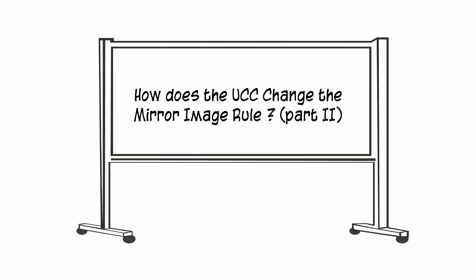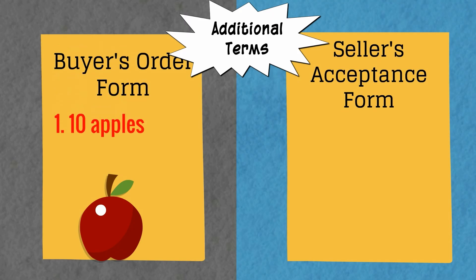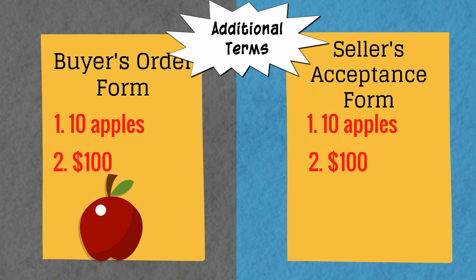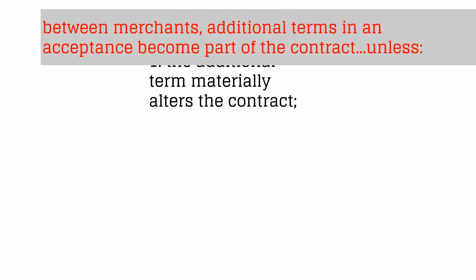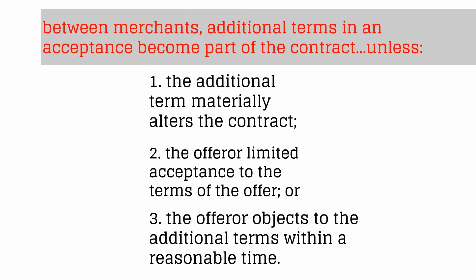In this video, we'll continue to look at how the Uniform Commercial Code, the UCC, modifies the mirror image rule. If you recall, in Part 1 we looked at additional terms, such as where a buyer orders 10 apples for $100 and the seller's acceptance says, 'Sure, 10 apples, $100, and we'll be wrapping those apples in plastic.' We learned additional terms can become part of the contract unless they materially alter the contract, or if the offerer says you can't add any terms to this offer, or if the offerer objects to the additional terms within a reasonable amount of time.